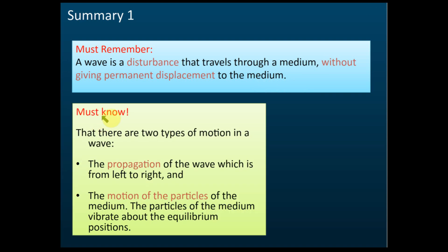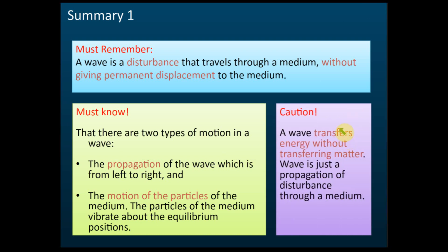For a wave, there are two types of motion. One is the propagation of the wave — you can see the wave moving from left to right. The other is the motion of the particles of the medium. The medium only vibrates about a fixed or equilibrium position. A wave transfers energy without transferring matter.